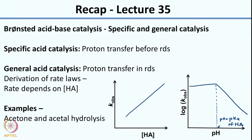As with specific acid catalysis, we looked at the rate law, and here what we saw is that the rate depends on concentration of HA. So if you plot K observed versus concentration of HA you would see a steady increase. Similar trends are seen for general base catalysis as well.